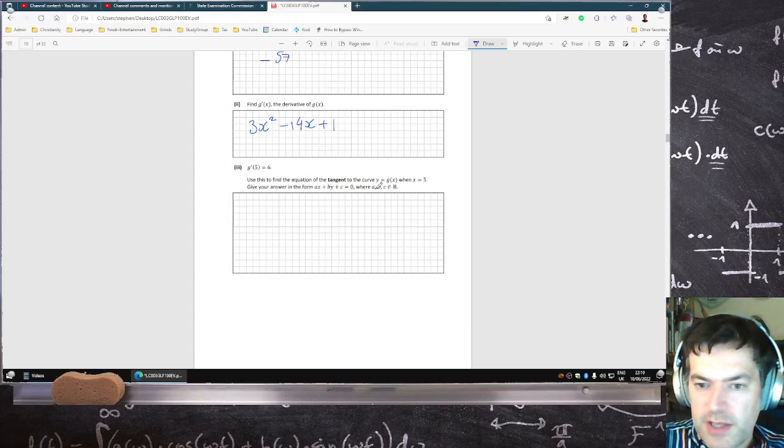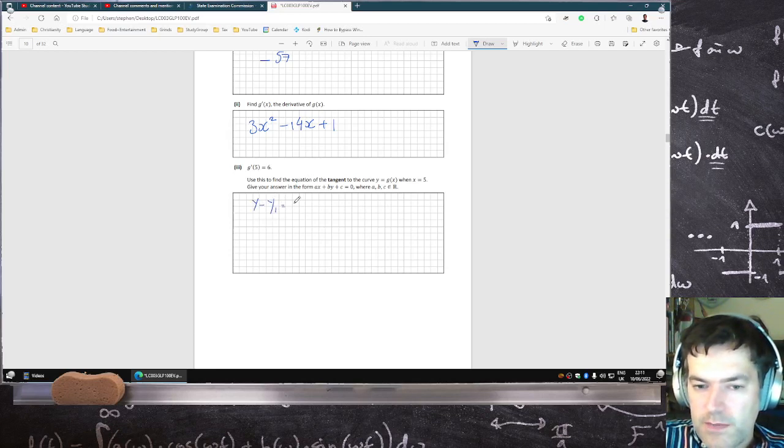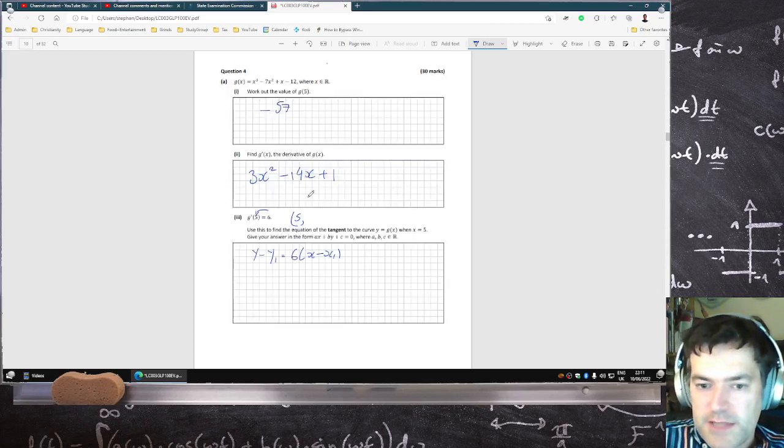I'll use this to find the equation of the tangent at 5, so that means the slope is 6. So it's y minus y1 equals m times x minus x1. What's the x1, y1? Well, we know the x1 is 5,